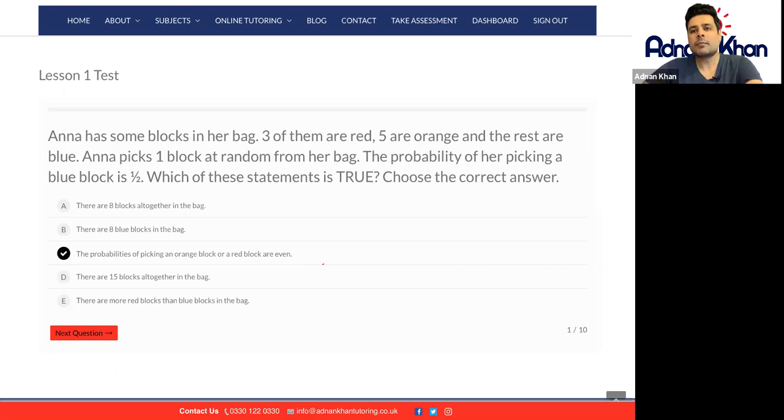Okay so let's read this question together. Anna has some blocks in her bag, three of them are red, five are orange and the rest are blue. Anna picks one block at random from her bag. The probability of her picking a blue block is a half. Which of these statements is true? Choose the correct answer.